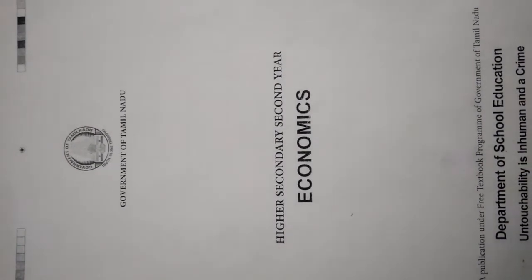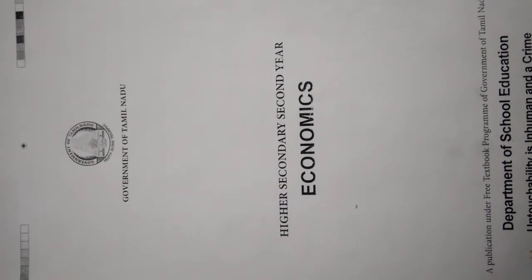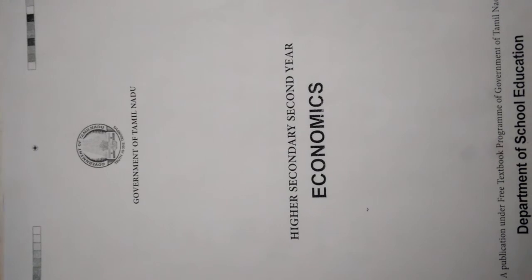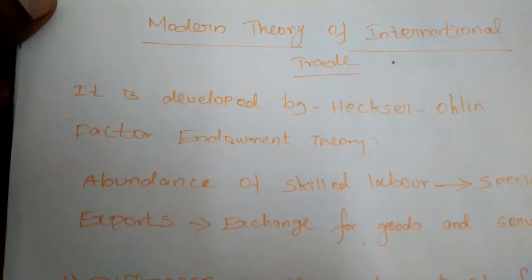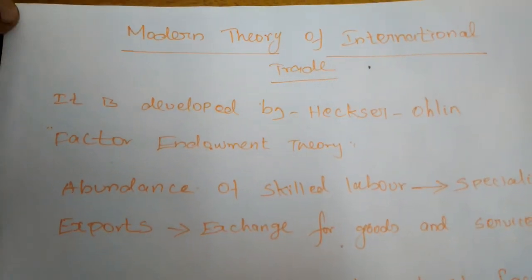Good morning students. Last day we studied about the absolute cost advantages and the relative cost advantages. Today we will study about the modern theory of international trade. This is the classical theories, so we will first remind what we studied last day before moving to the next step. Last day we studied the absolute cost advantages theory and the comparative cost advantages theory — these two theories were classical theories of international trade.